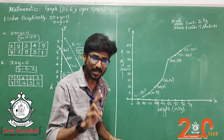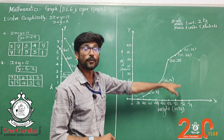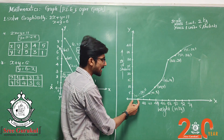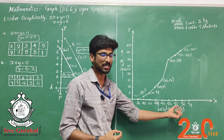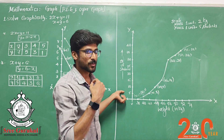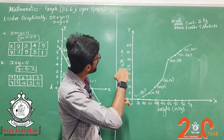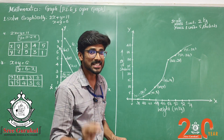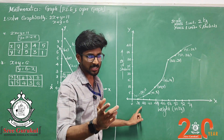The ogive graph is very easy. There are two types: less than type goes upward (rises), and more than type falls. Use X-axis and Y-axis with equal intervals. On the X-axis, mark the upper class limits; on the Y-axis, mark the corresponding cumulative frequencies. Choose a suitable scale so that the graph utilizes the full page appropriately — choosing the right scale is very important.